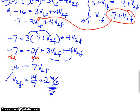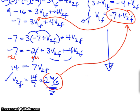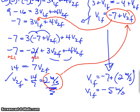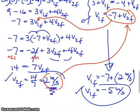V2 final is going to equal 14 over 7 or 2 meters per second. That's my first answer. Now I'm going to take this and plug it back in. I get V1 final equals minus 7 plus 2 meters per second. V1 final equals minus 5 meters per second. So there's my one answer and there's my second answer.